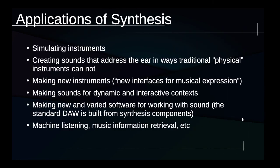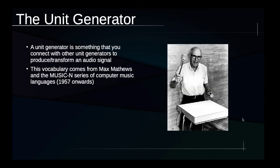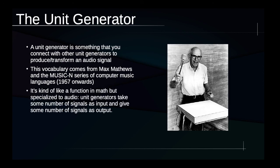The term unit generator tends to be used in relation to software, because this vocabulary comes from Max Matthews — pictured here on the right — the computer music pioneer who created a series of computer music languages sometimes called the Music N languages, because the first one was called Music 1, then Music 2, Music 3, and so forth. In those languages, he used the vocabulary 'unit generator' to describe each synthesis component that you could put into your project and have interact with other unit generators. We're going to use that terminology in this course as well.